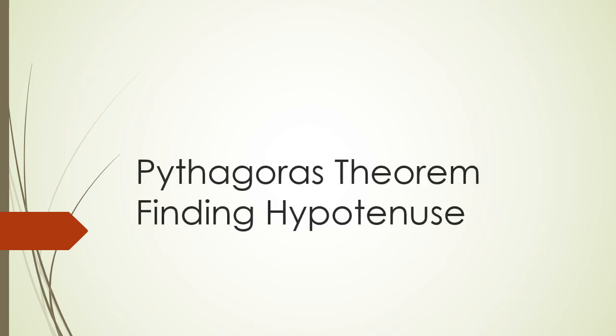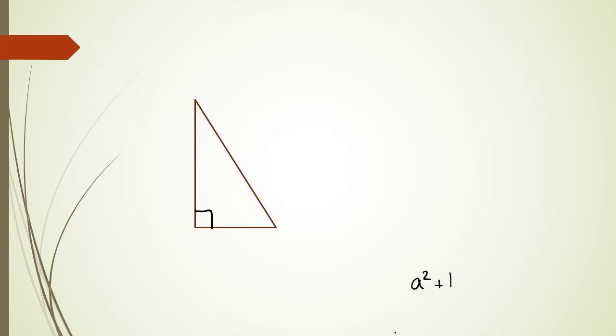In this session we're going to be looking at Pythagoras' theorem and finding the hypotenuse — the very basics. To do this we need to look at a right angle triangle. Pythagoras' theorem states that a squared plus b squared equals h squared. The h stands for the hypotenuse, which is the side opposite the right angle. As for a and b, it doesn't matter which side you label which.